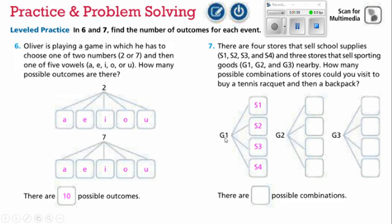After going to the sporting store number 1, any one of those four school supply stores we could go there, or the same with going after sporting goods store number 2 or sporting goods store number 3. That makes 12 possible combinations.